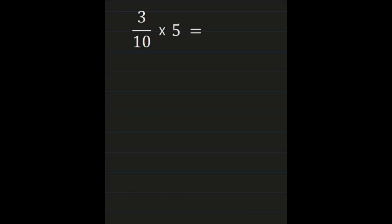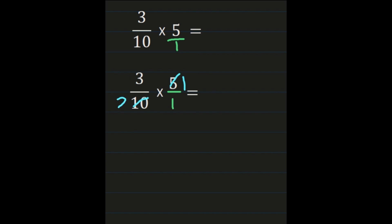For our final example, we have 3 tenths times 5. The first thing you need to do is turn that whole number into a fraction by putting the 5 over 1, so you can do numerator times numerator and denominator times denominator. Rewrite the problem so that your numerators are lined up and your denominators are lined up. In this problem, I want to do some cross-simplification. Looking at 5 and 10, they share a common factor of 5. 5 divided by 5 is 1, and 10 divided by 5 is 2.